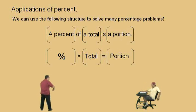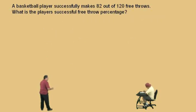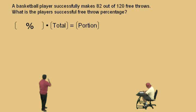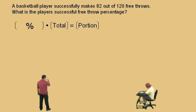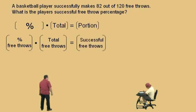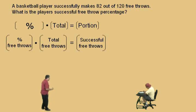Here's our first problem. A basketball player successfully makes 82 out of 120 free throws. What is the player's successful free throw percentage? Now, here's our format: a percent of a total is a portion. In this problem, our percent represents the percent of free throws that are made. Our total is our total free throws, and our portion is the successful free throws. Which one are we looking for — the percent, the total, or the portion? The percent. That's right, the percent of free throws, because we want the free throw percentage. So that will be our x.